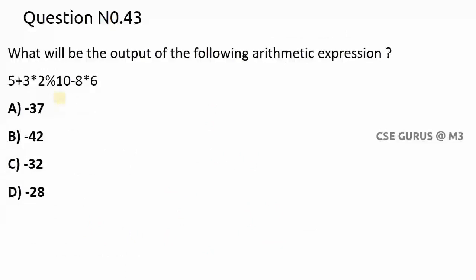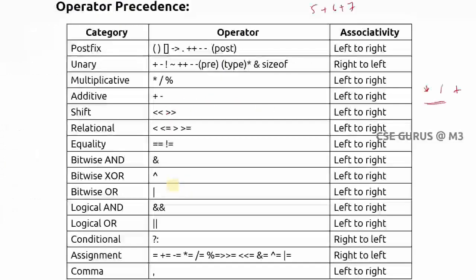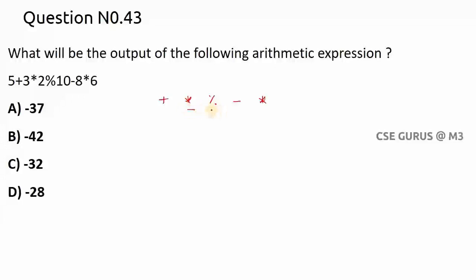Coming to question number 43: what will be the output of the following arithmetic expression? The expression has plus, multiplication, percentile (modulo), minus, and multiplication operators. We need to follow the operator precedence table. Multiplication and modulo have higher precedence than plus and minus. When there are multiple operators of the same precedence, we go left to right.